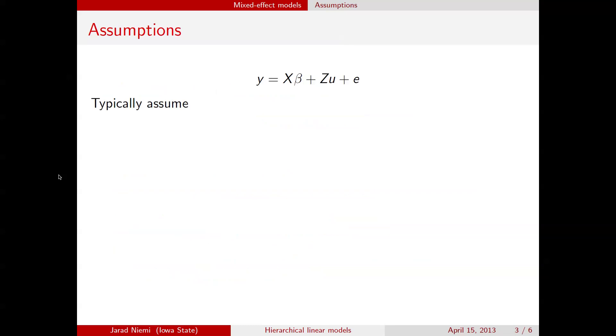So what are the assumptions under this model? I've just rewritten the model there for reference, but here are the main assumptions. That is, the expectation for the random effects and for the error terms are both 0. The variance for the random effects is some covariance matrix G, the covariance matrix for the error term is some covariance matrix R, and the covariance between the random effects and these error terms is 0.